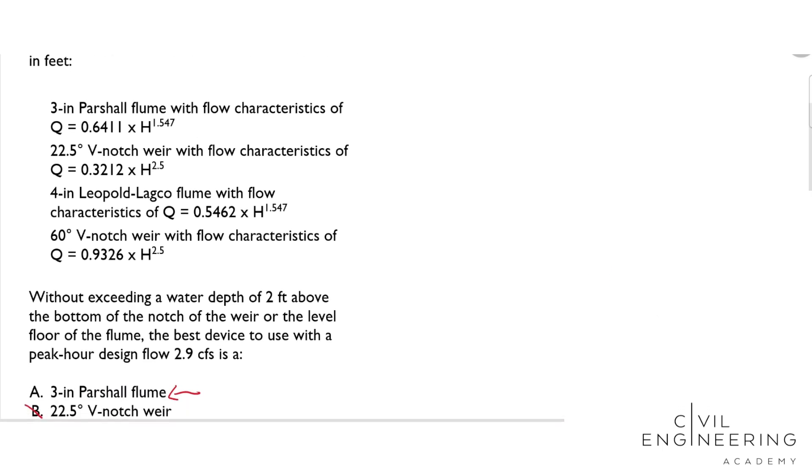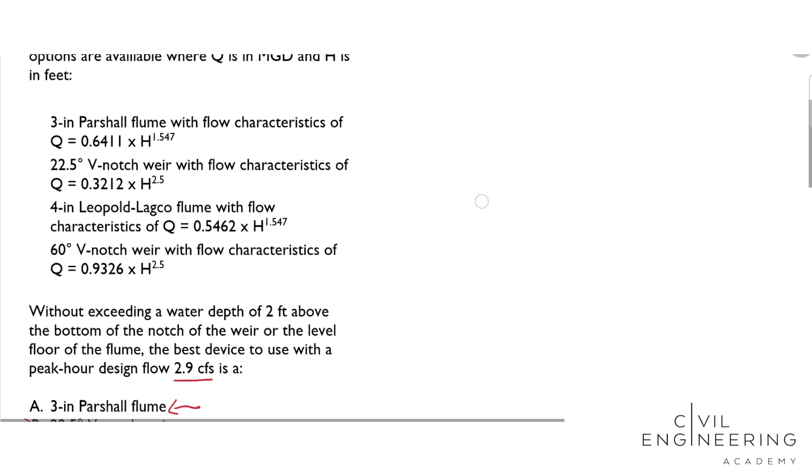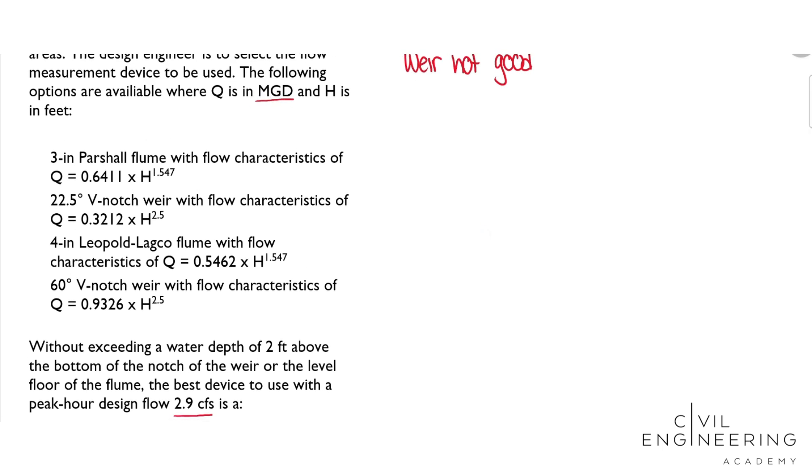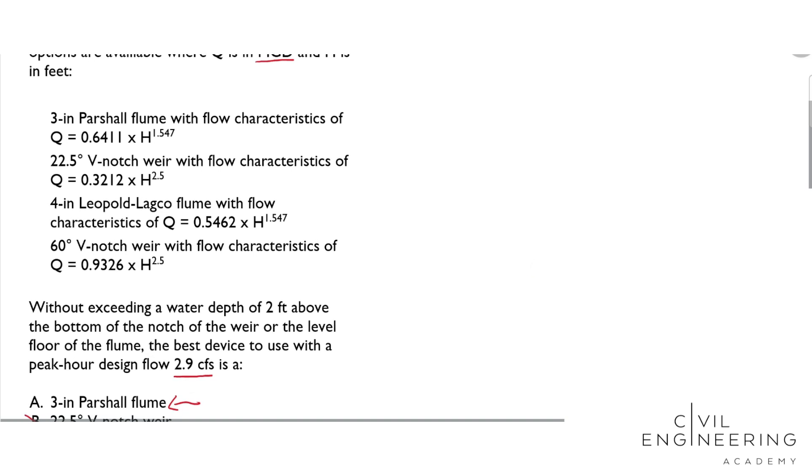Let's go ahead and first start off with converting this design flow from cubic feet per second to MGD, because that's what the equation wants. We'll do step 1, 2.9 cubic feet per second times 0.6463 million gallons per day per CFS.